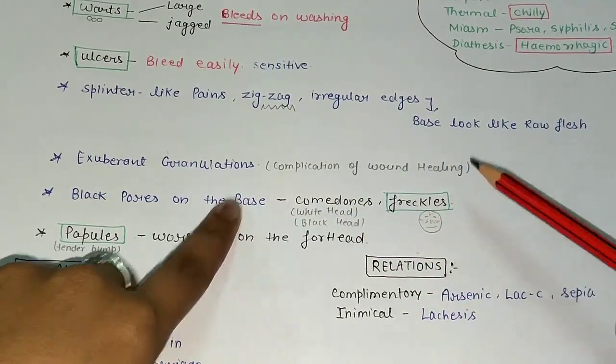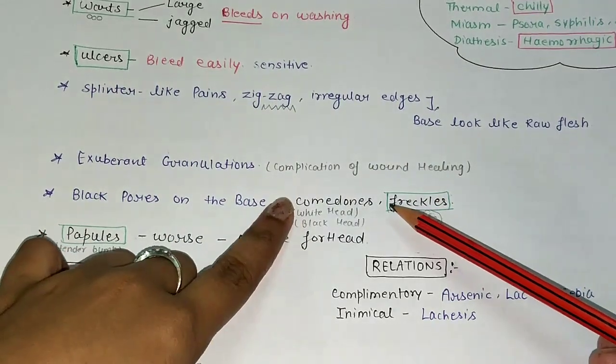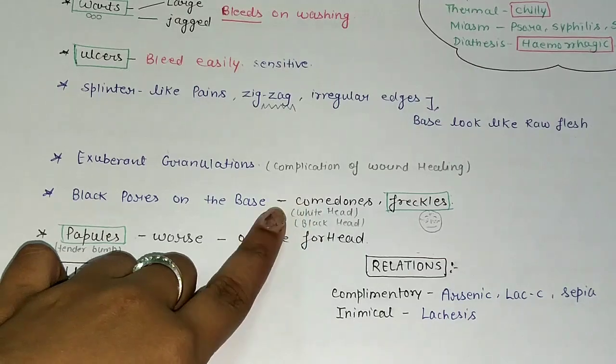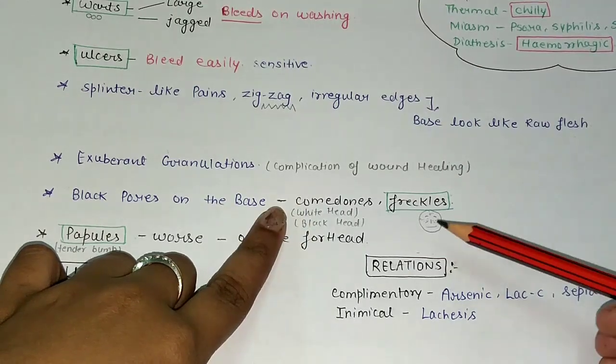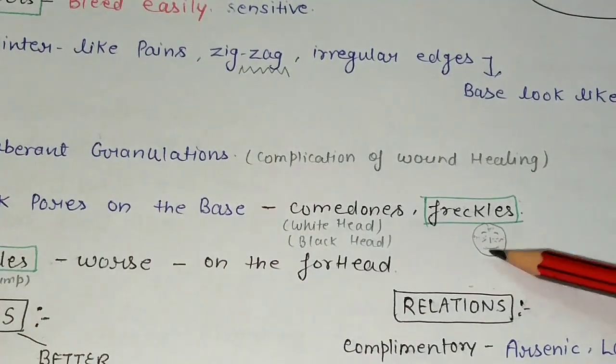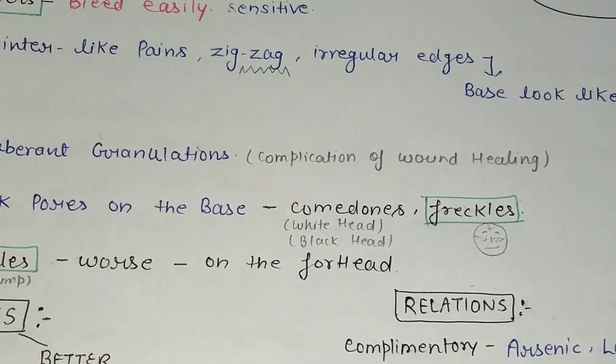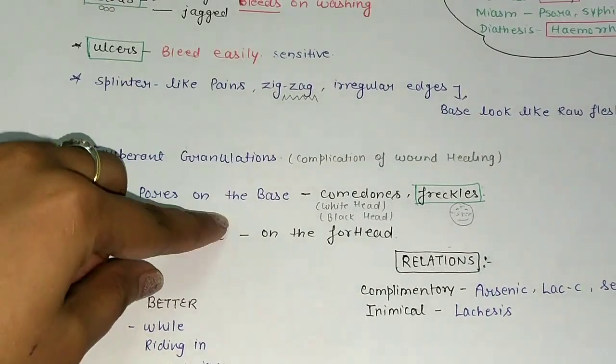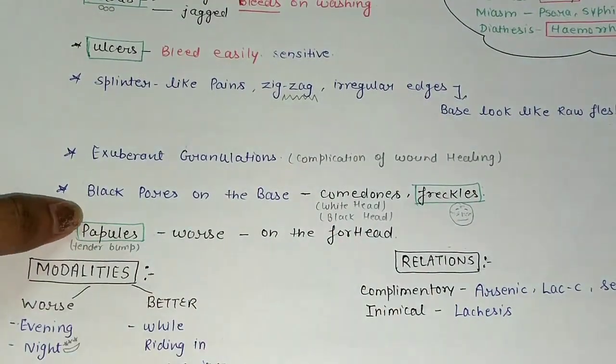Comedones - what are whiteheads and blackheads which we call on the face, and freckles which are brown spots which I have made a diagram so you can see it, we call freckles. After that, papules which are worse on the forehead. What are papules? Papules are tender bumps on the skin.